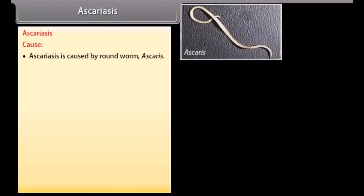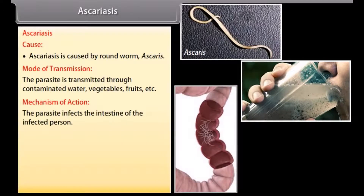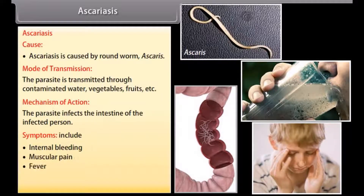Ascariasis is caused by the roundworm Ascaris. The parasite is transmitted through contaminated water, vegetables, and fruits. It infects the intestine of the infected person. Symptoms include internal bleeding, muscular pain, fever, anemia, and blockage of the intestinal passage.